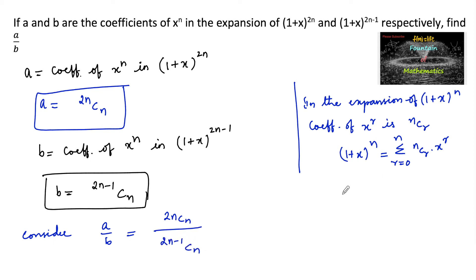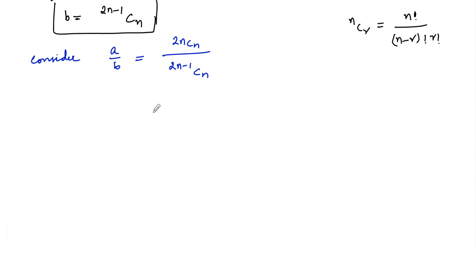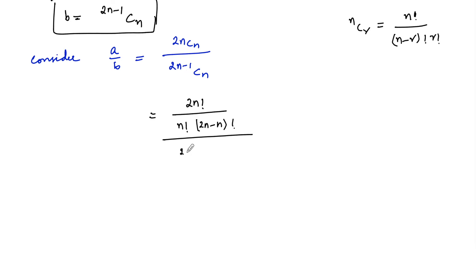Since we know that nCr is equal to n factorial by n minus r factorial into r factorial, we can write 2nCn as 2n factorial by n factorial into n factorial, upon 2n minus 1 factorial by n minus 1 factorial into n factorial.